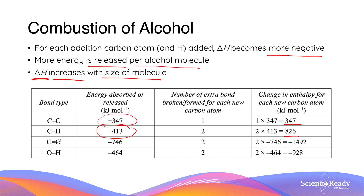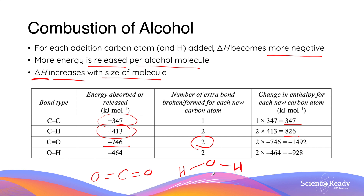What about bond formation? Every time we add a carbon atom, we form an additional molecule of carbon dioxide. In one molecule of carbon dioxide, we are forming two new C=O bonds, each one releasing 746 kilojoules of energy per mole. At the same time, we also form one additional molecule of water, which contains two additional O–H bonds, each releasing 464 kilojoules of energy.